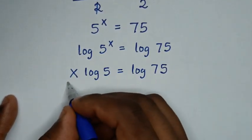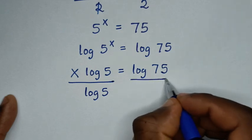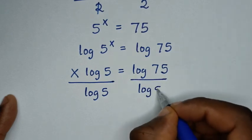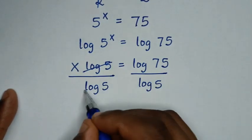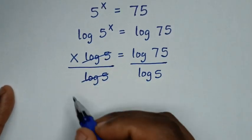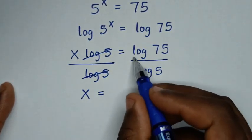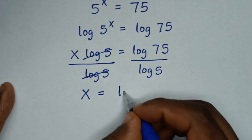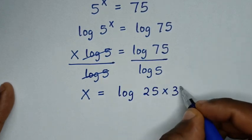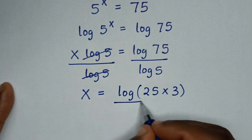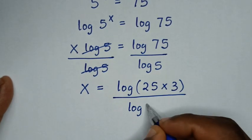Then we'll divide by log of 5 on both sides, so this log of 5 will cancel. Then it will be x is equal to log of 75 over log of 5. Now log of 75 is the same as log of 25 times 3, all over log of 5.